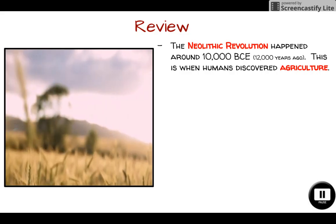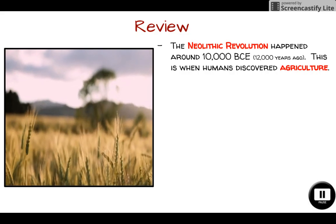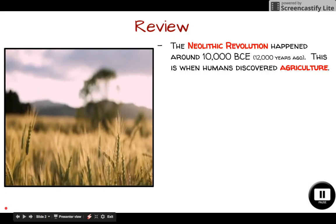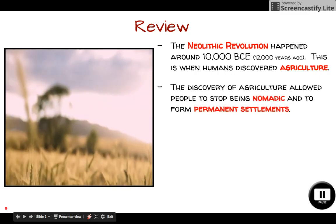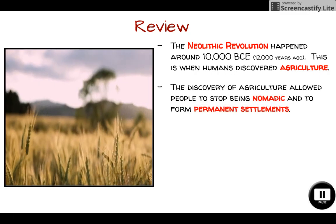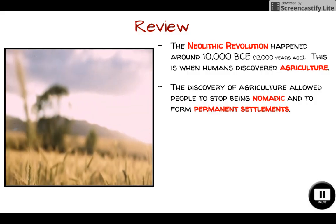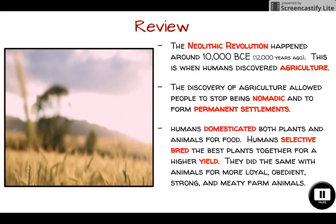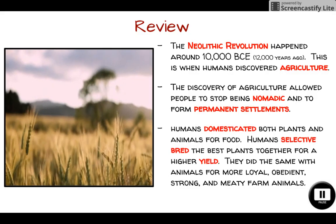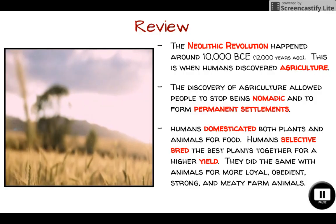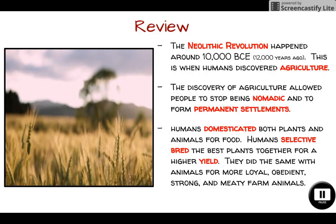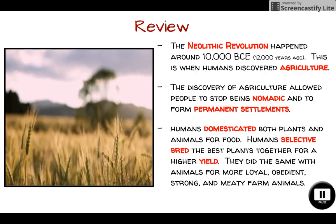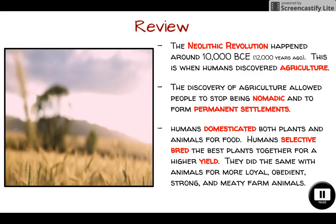This event is when humans discovered the process of agriculture. Agriculture gave us many different pros and cons, but one of the biggest pros is that we can stop being nomadic and wandering from place to place following the food source, and we can begin to build permanent settlements. During this time, humans also began domesticating both plants and animals through a process known as selective breeding — breeding plants or animals for specific traits, such as high yield within crops or obedience within animals.